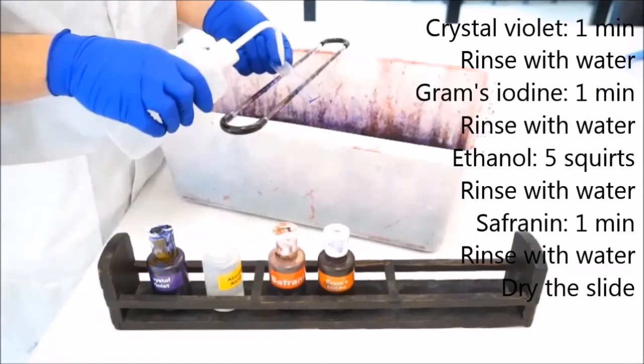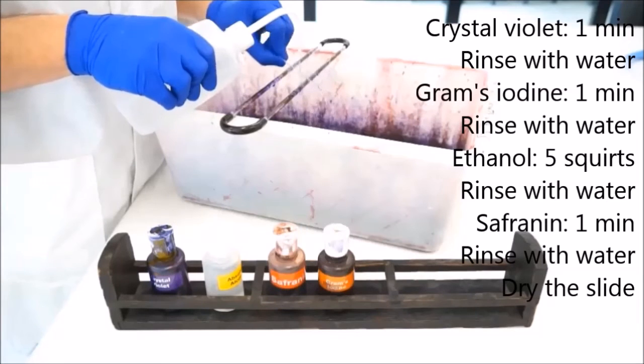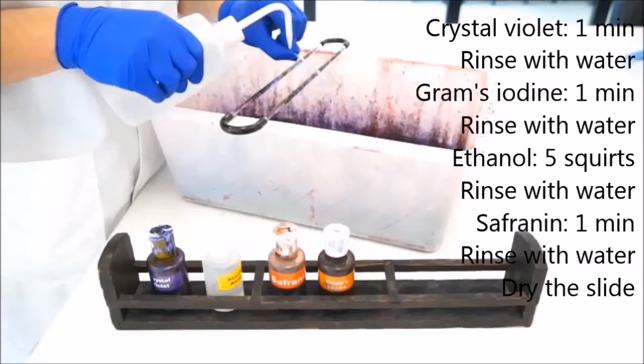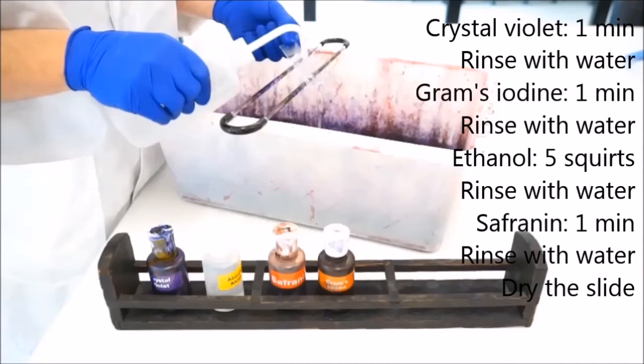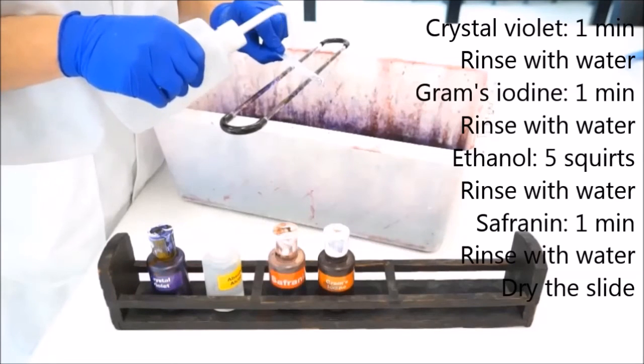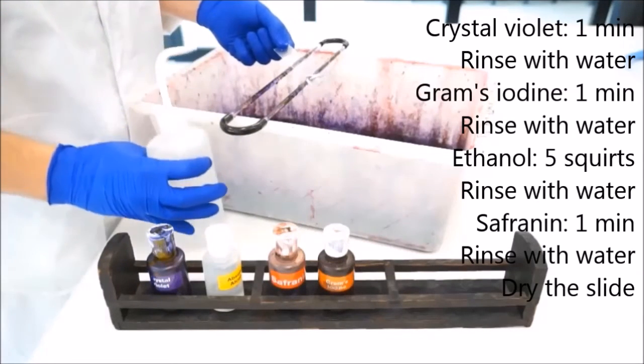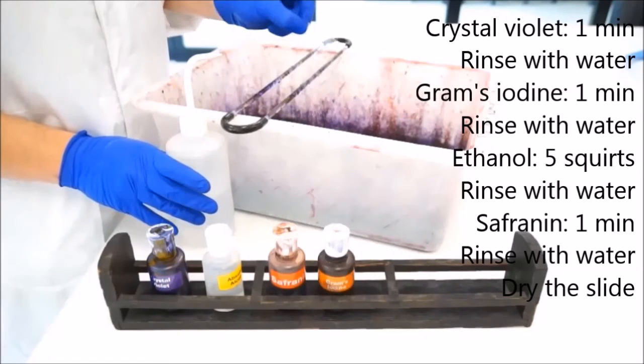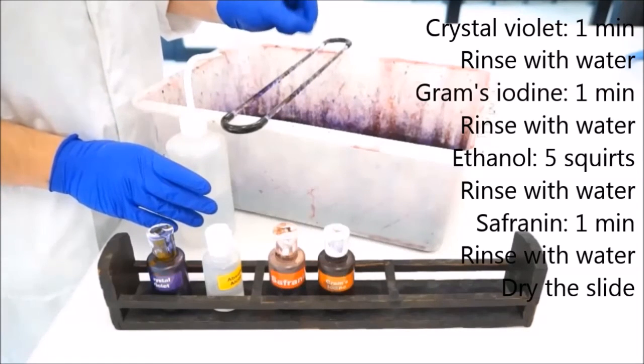Then immediately get some water on there to make sure that it doesn't decolorize too far. So that five squirts of ethanol is enough to be differential for the stain.